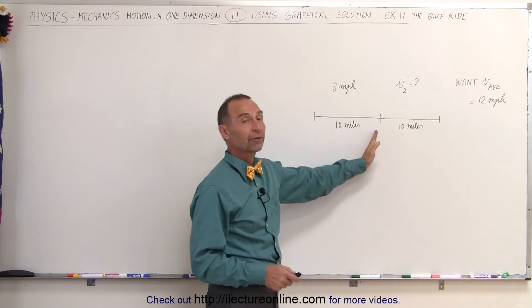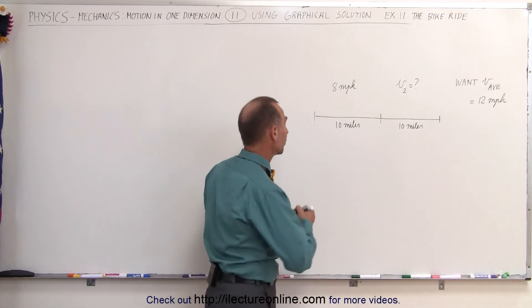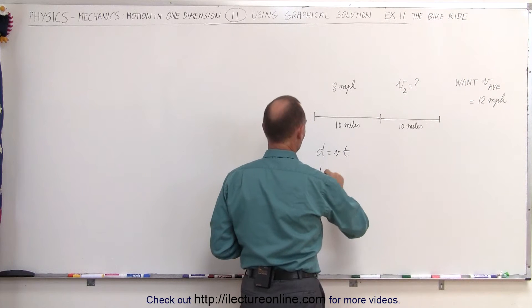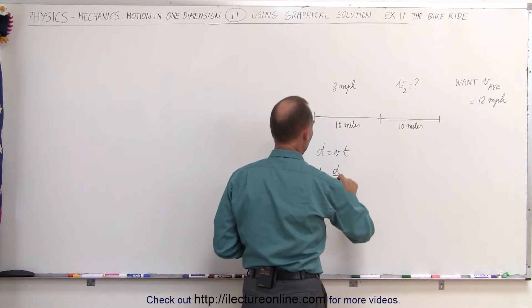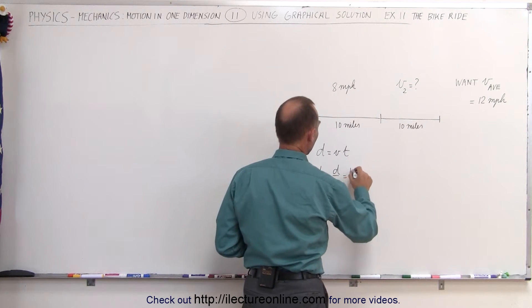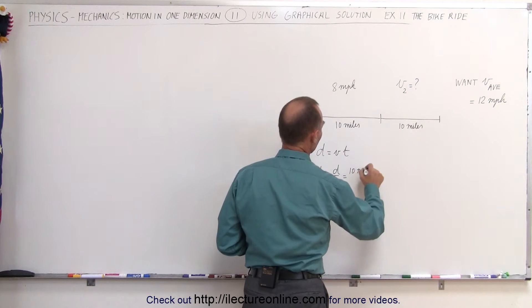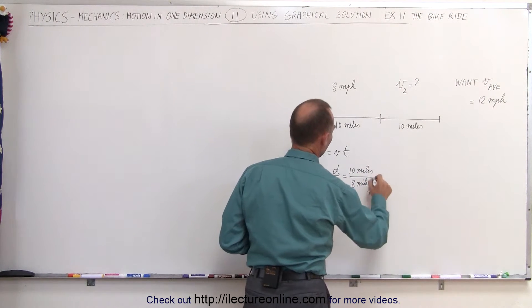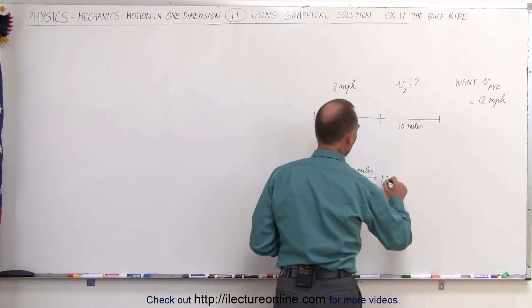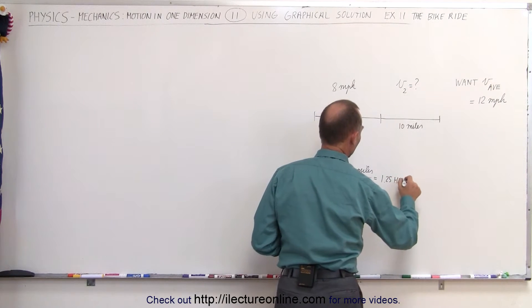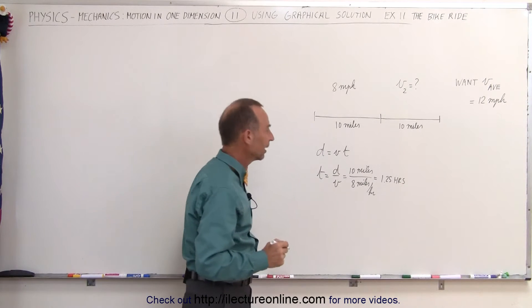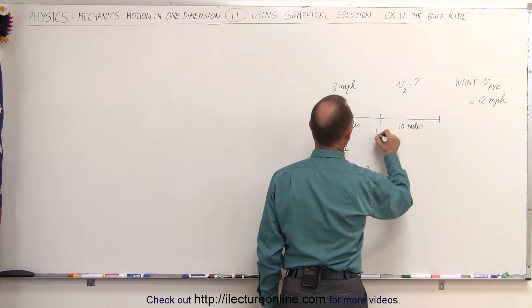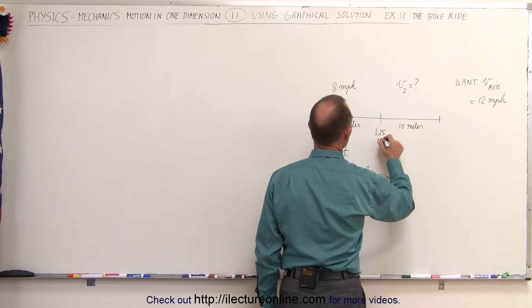It would be very easy to figure out how long that will take because we know that distance equals velocity times time, so time equals distance divided by velocity — 10 miles divided by 8 miles per hour — and that gives us 1.25 hours to get to this point.